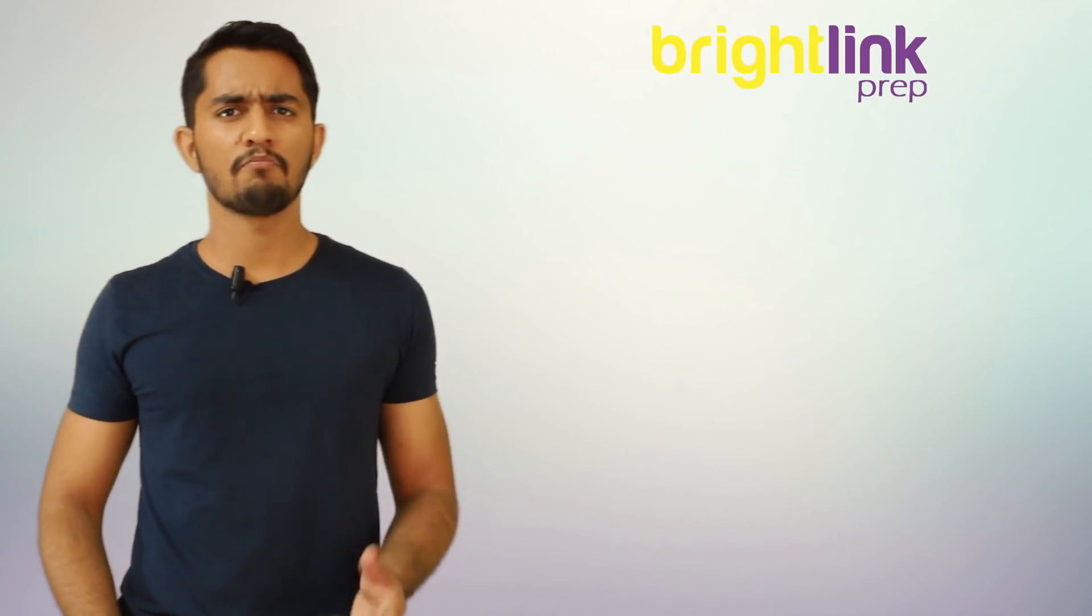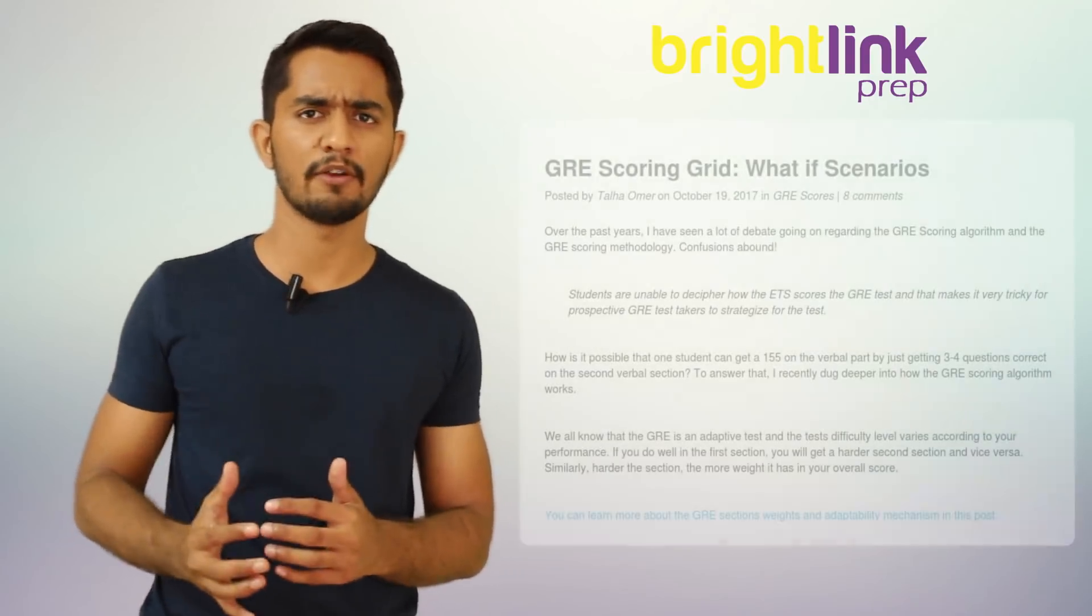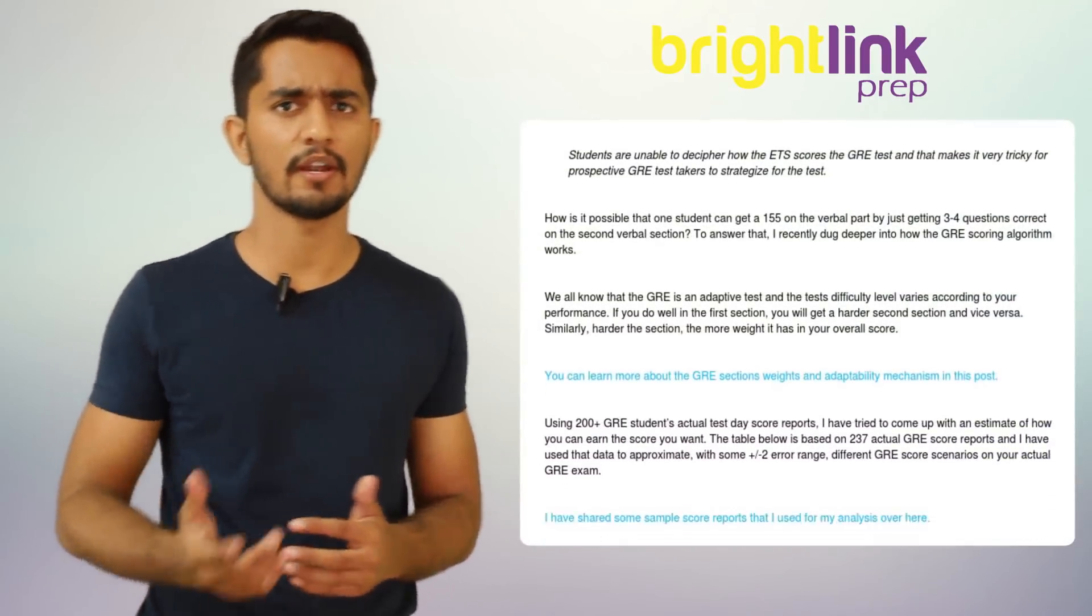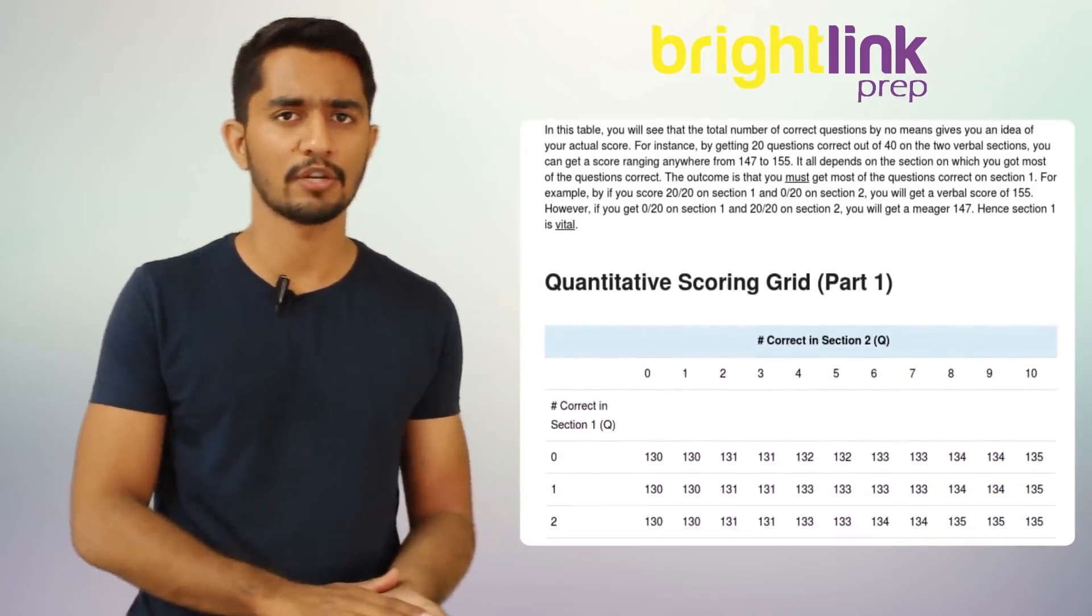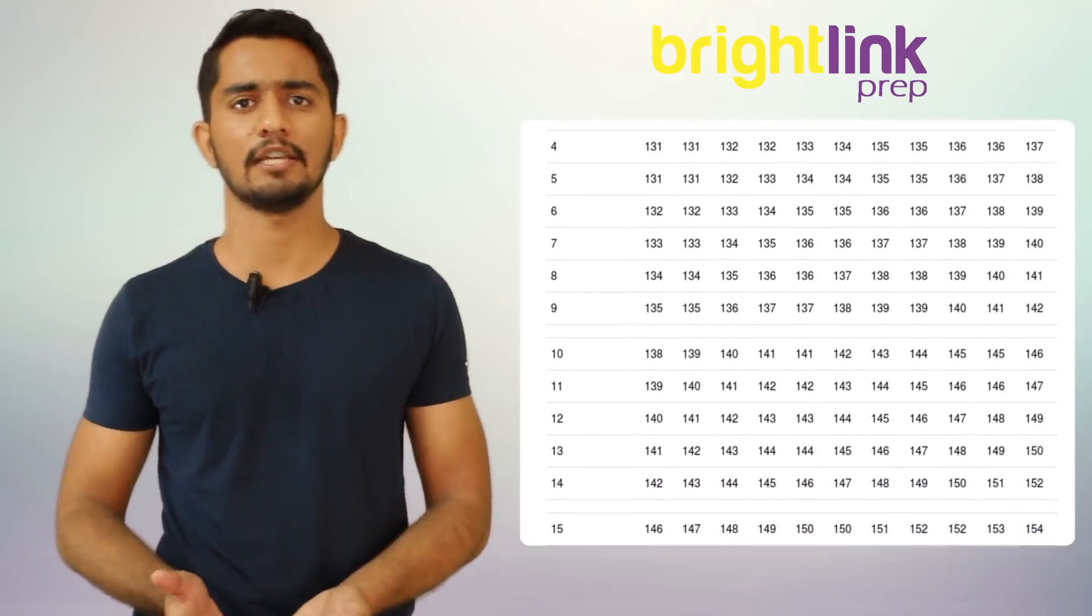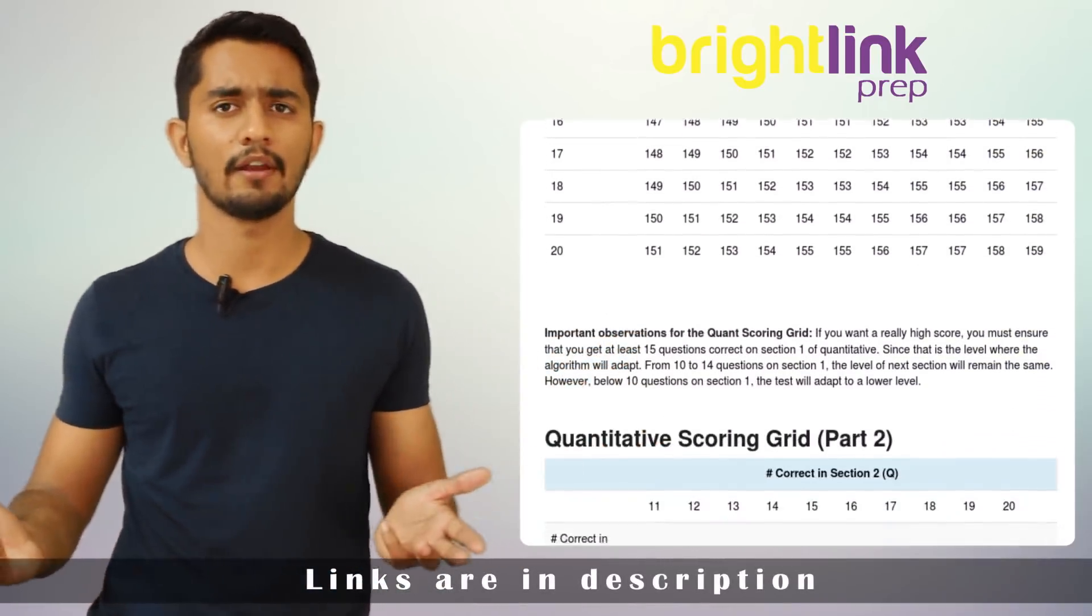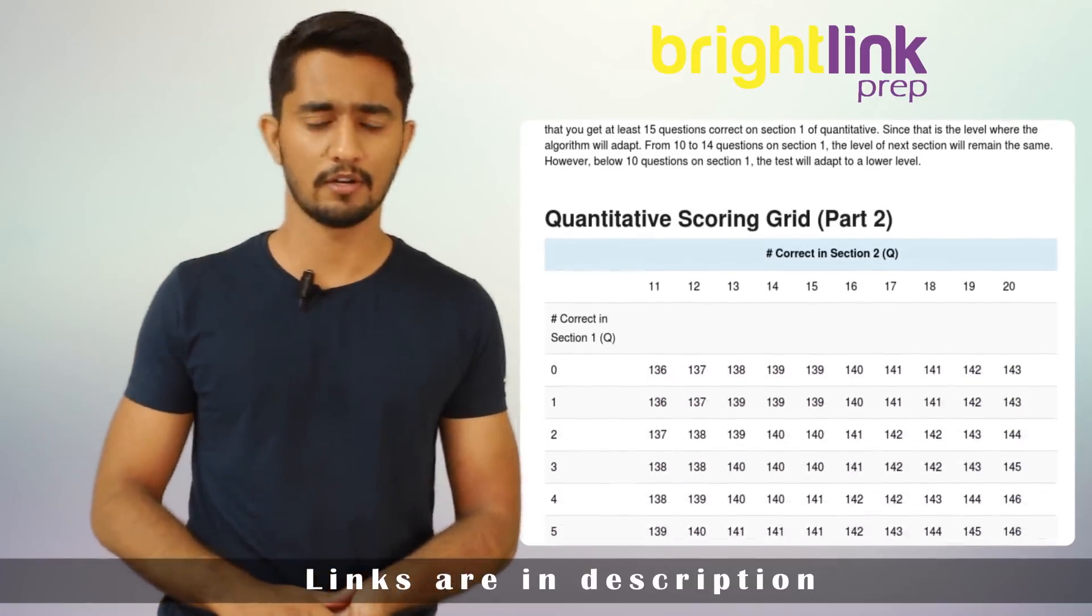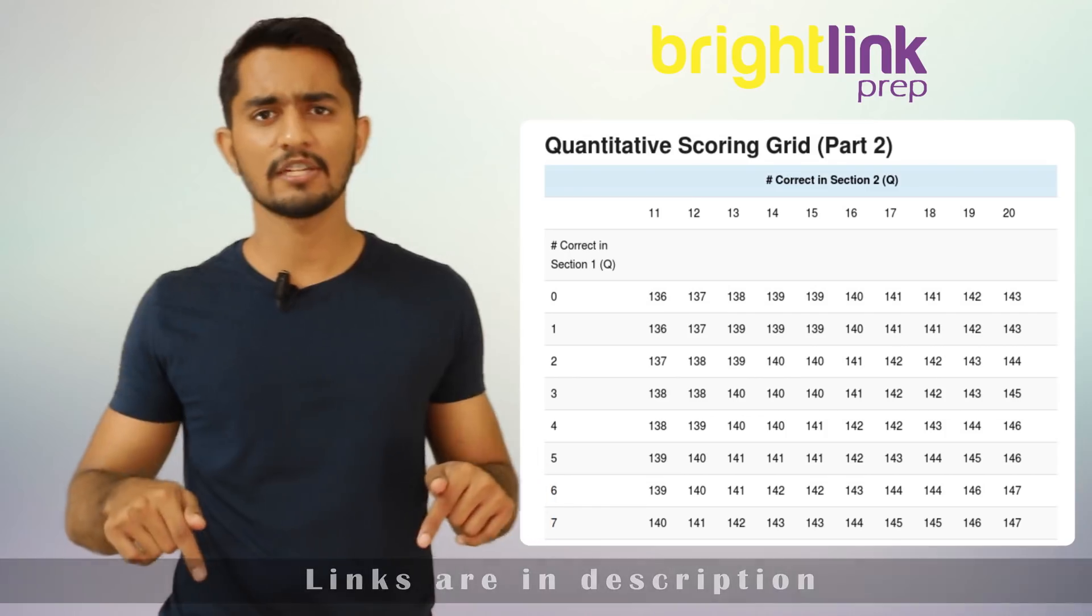There is a site called brightlinkprep.com which gives you a rough estimate, not official figures, of how much your score can be if you attend X number of correct questions in the first section and Y number in the second section. The link for that and all other prep material will be down in the description.